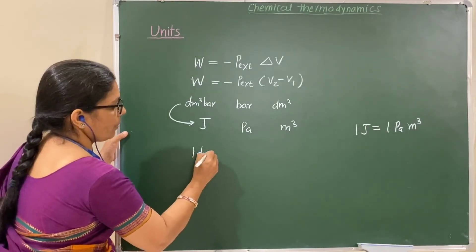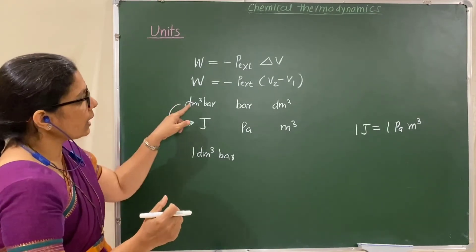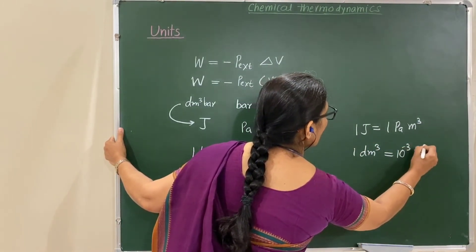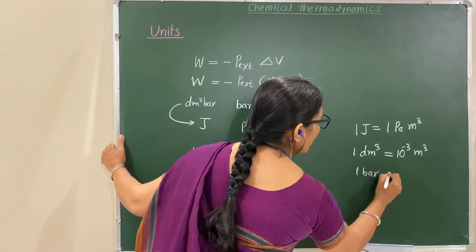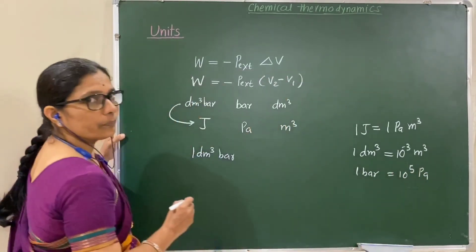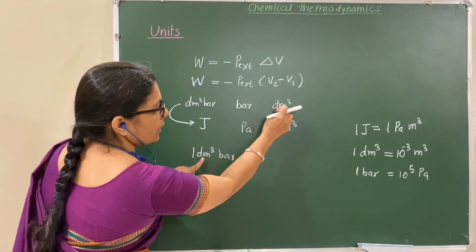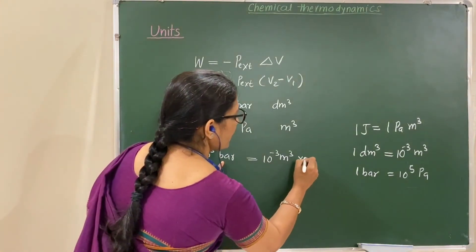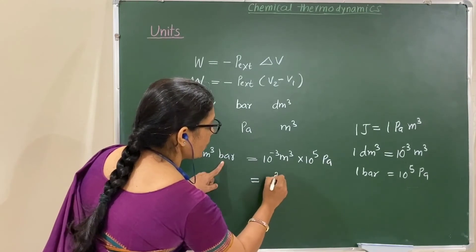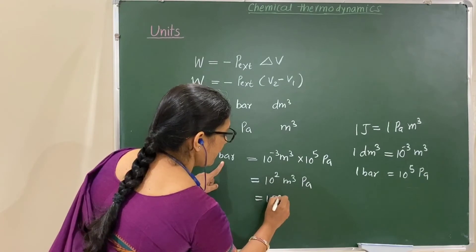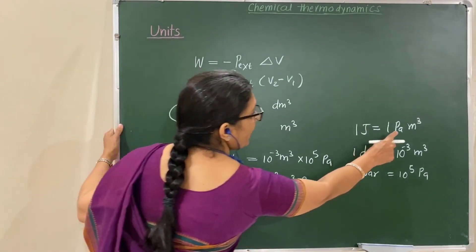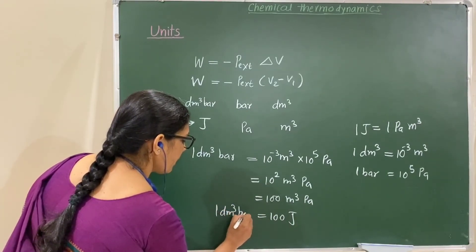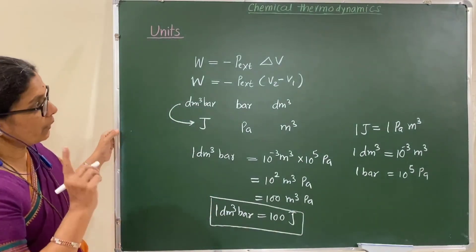Suppose pressure is in its SI unit Pascal and volume in meter cube, then work is in Joules, since 1 J = 1 Pa·m³. Now, 1 dm³·bar equals how many Joules? Convert: 1 dm³ = 10⁻³ m³ and 1 bar = 10⁵ Pa. Therefore 1 dm³·bar = 10⁻³ × 10⁵ Pa·m³ = 10² Pa·m³ = 100 Joules. So 1 dm³·bar equals 100 Joules.